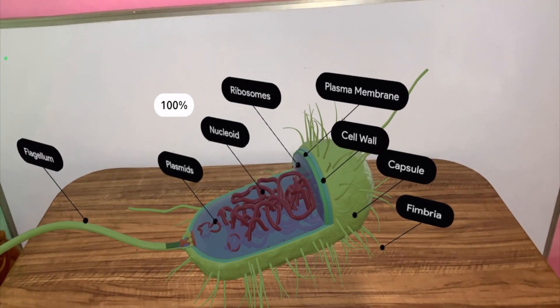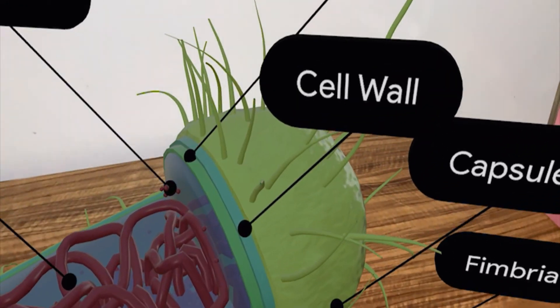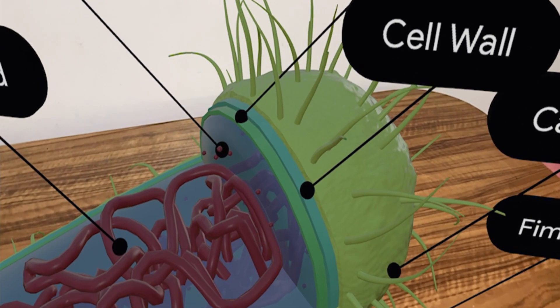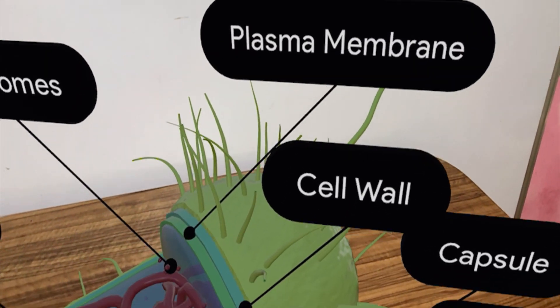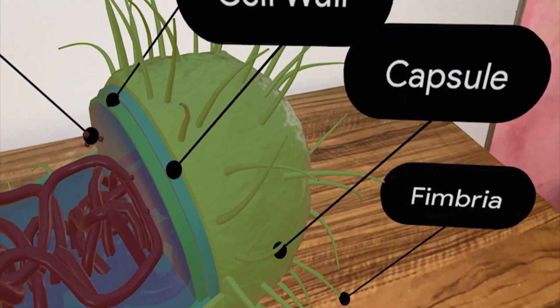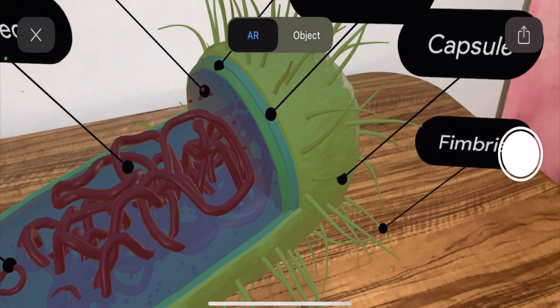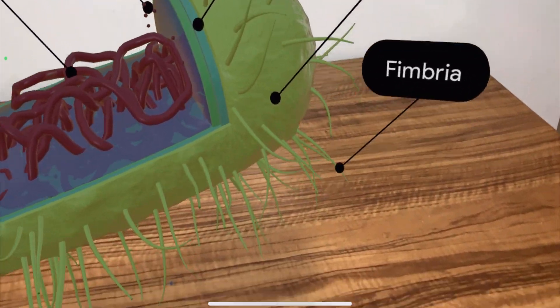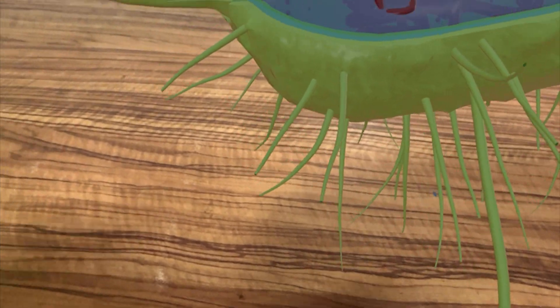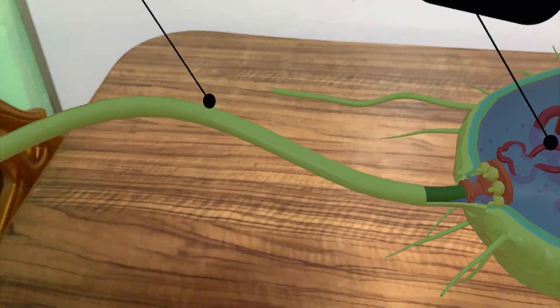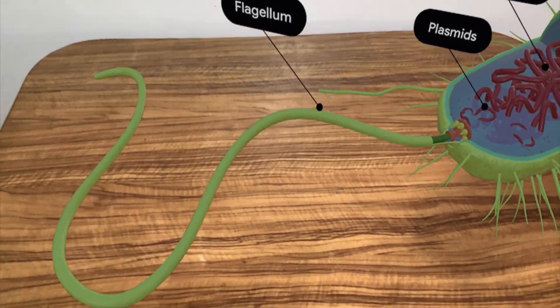Now let us see the different types of organelles and the structural features of bacterial cell, and we will study with the help of augmented reality. So we are observing here the plasma membrane and cell wall. You can see plasma membrane is in dark green color and cell wall is in light blue color. And then there is a capsule which is in light green color. Then these are the fimbriae. You can see numerous fimbriae all over the cell. And this is the green color long extended flagellum organelle.